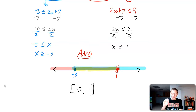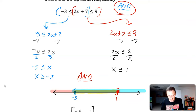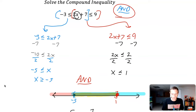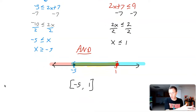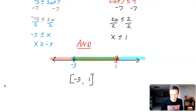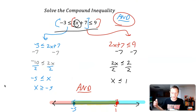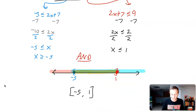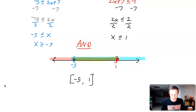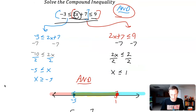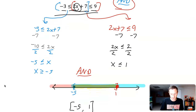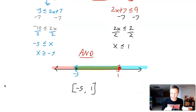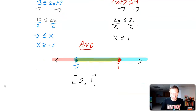That means plugging in an x value from that interval will make a true statement for both inequalities. With 'or', you only need to make one or the other true; 'and' means both must be true. That's why this compound inequality is understood as an 'and' solution — the expression 2x plus 7 is sandwiched between the two values, so x must satisfy both. Just approach it as two separate inequalities and combine at the end. Good luck, hopefully this helps!